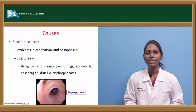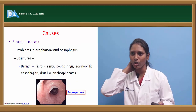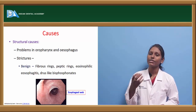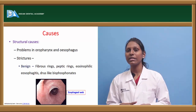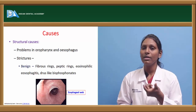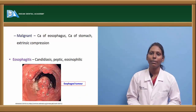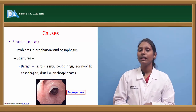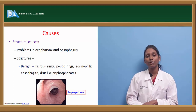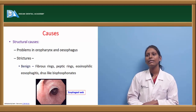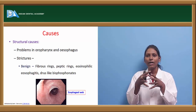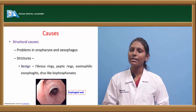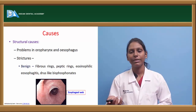Now coming to the causes of dysphagia. Normally we may have structural causes, which include problems in the oropharynx and esophagus. These structural changes include strictures — constrictions that can be either benign or malignant. Benign structural changes include fibrous rings such as Schatzki rings, usually seen in the esophagus. Peptic rings can also be seen, as well as eosinophilic esophagitis, and certain drugs like bisphosphonates can also cause benign strictures.